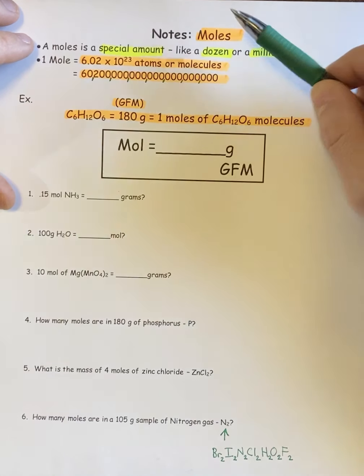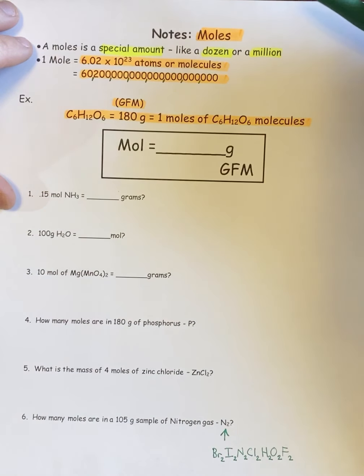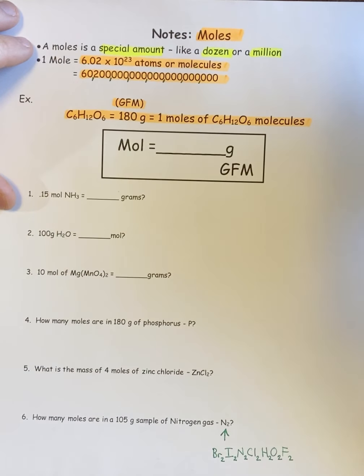So a mole means 6.02 times 10 to the 23rd of whatever we're talking about. We could have a mole of atoms, a mole of molecules, you could have a mole of marbles, although it would be quite a bit. So it's just a number.